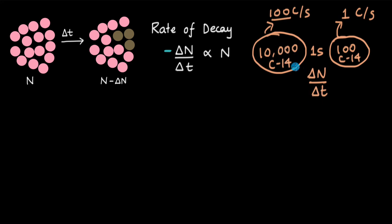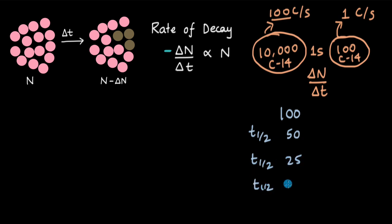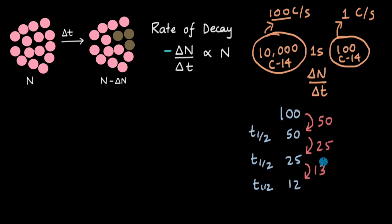We can also see this from half-life data. For a random sample X starting with 100 radioactive nuclei, after one half-life 50 remain, after another half-life 25 remain, and after one more about 12 remain. In the same time interval of one half-life, first 50 decayed, then 25 decayed, then 13 decayed. So delta n by delta t decreases as N decreases.